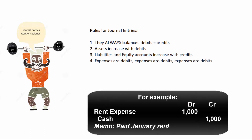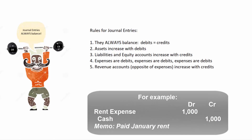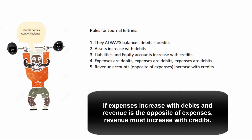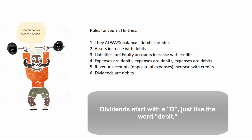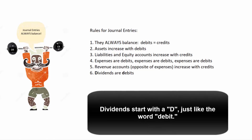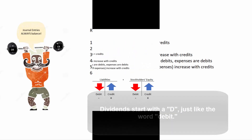Expenses are debits — memorize that. The opposite of expenses is revenue, so revenue must increase with credits. Dividends start with the letter D, and that reminds us that they are recorded with debits.